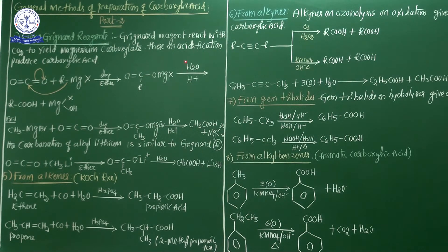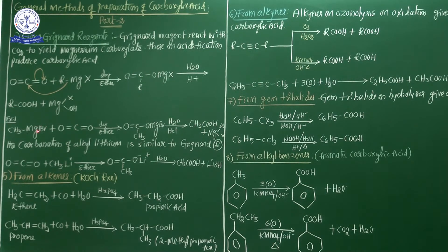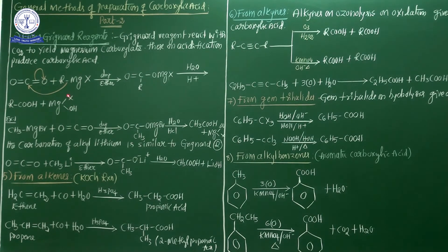After magnesium carboxylate, acidification occurs. H⁺ is attacked to the magnesium carboxylate. Finally, R-COOH is obtained — that is the carboxylic acid group. Additionally, MgXOH is formed. This is the preparation method of carboxylic acid from the Grignard Reagent.